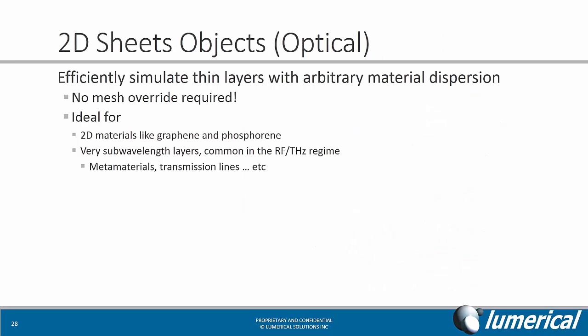The next feature is only relevant for optical simulations, and these are 2D sheet objects. 2D sheet objects allow users to efficiently simulate very thin sub-wavelength layers with arbitrary material dispersion. No mesh override is required, and you can get away with a very coarse mesh. This is really ideal for 2D materials like graphene or phosphorene, as well as very sub-wavelength layers, which are common in the RF and terahertz regime. This applies for applications like metamaterials and transmission lines.